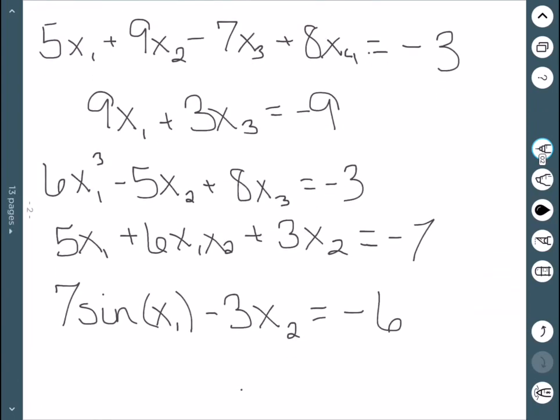So here are a few examples and non-examples. So my first equation, 5x1 plus 9x2 minus 7x3 plus 8x4 equal to negative 3. This is a linear equation in four variables.